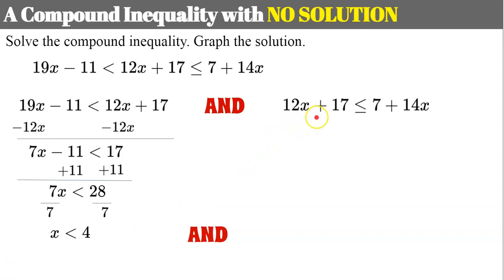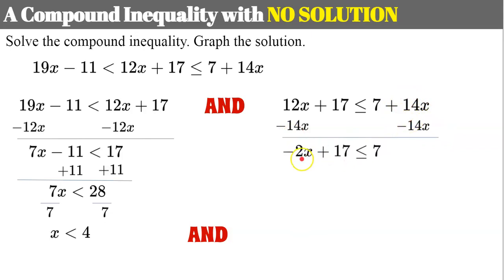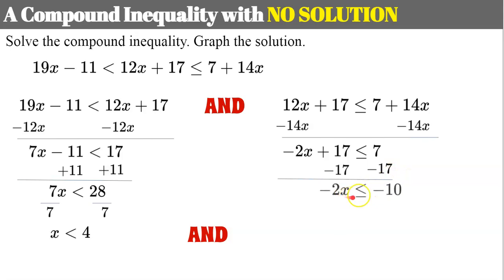Now solve the second inequality: subtract 14x from both sides giving me negative 2x plus 17 less than or equal to 7. Subtract 17 from both sides giving me negative 2x is less than or equal to negative 10. Divide both sides by negative 2 — it's a negative value so I reverse the symbol — and I have x is greater than or equal to positive 5.